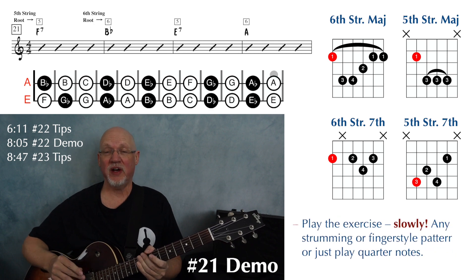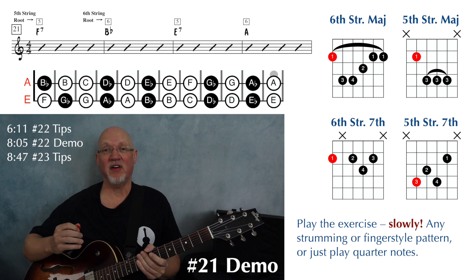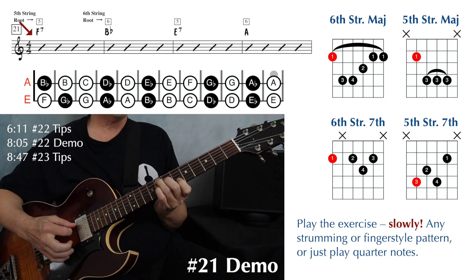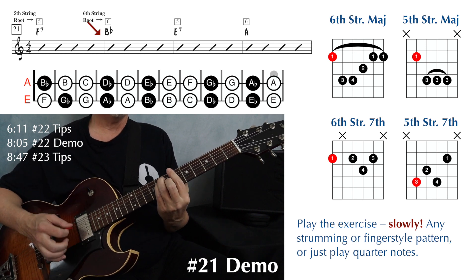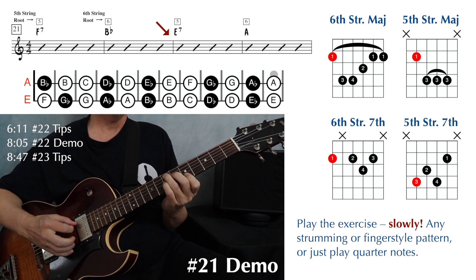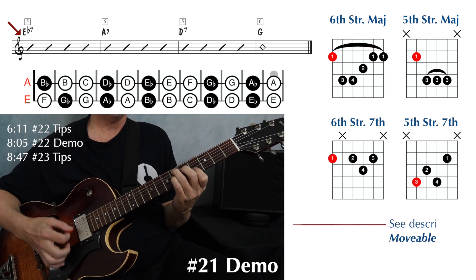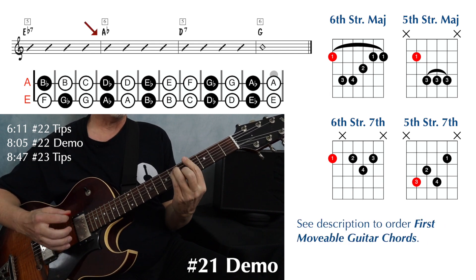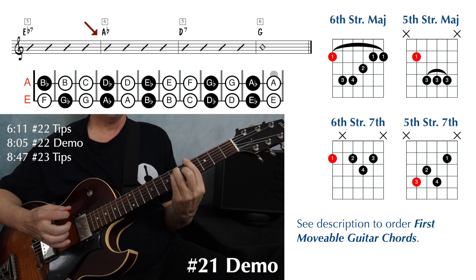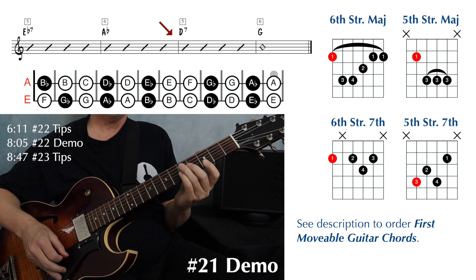Now that we know where to play these chords, go ahead and play through the exercise. Again, play as slowly as you need to — it's more about finding these chords than it is speed. F seven. B flat major. Moving to E seven. A major. E flat seven. A flat major. D seven. And then G major.